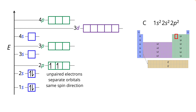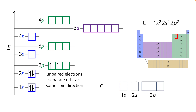We've filled in the electrons into the orbital boxes, and now we write our orbital notation horizontally: 1s² 2s² 2p². Notice we show a little more information here because it clearly shows that the two electrons in the 2p subshell are in separate orbitals with the same spin states.